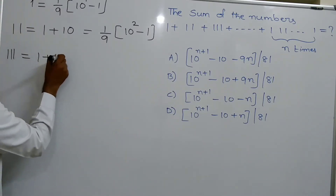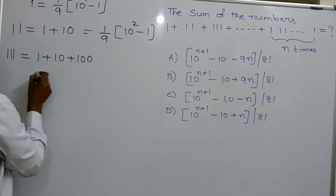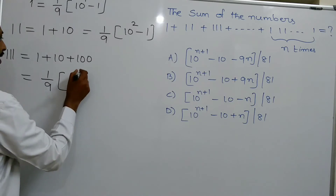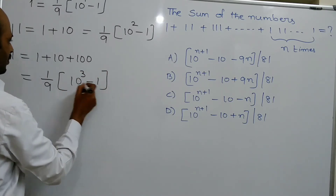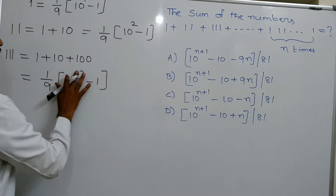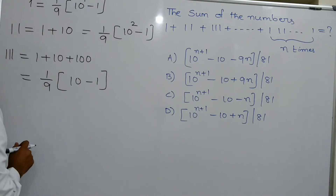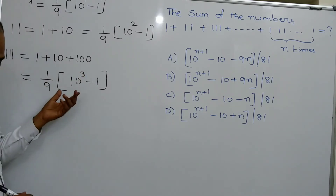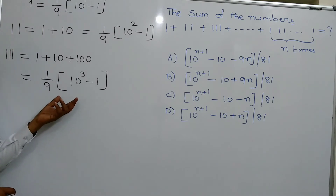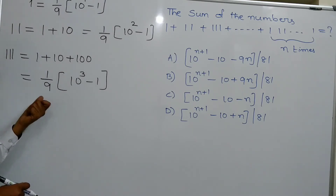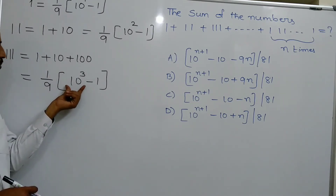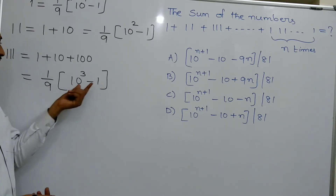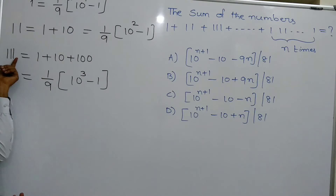Similarly, 111 can be written as 1 plus 10 plus 100, which equals 1 by 9 into (10 cubed minus 1). This again gives you triple 1, i.e., 111.